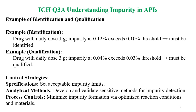Coming to control strategies for impurities: specifications setting is required — set the acceptable impurity limits. Develop and validate analytical methods so they are sensitive for impurity detection. Control the process parameters to minimize impurity formation via optimized reaction conditions and control the materials for drug substances.